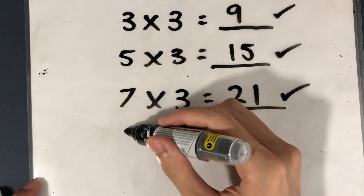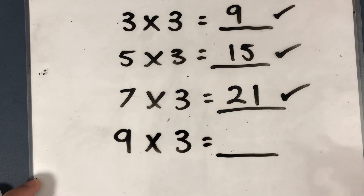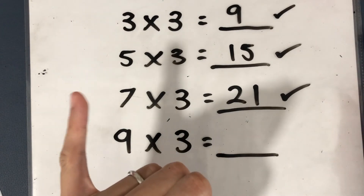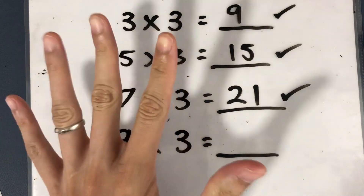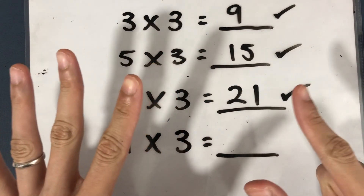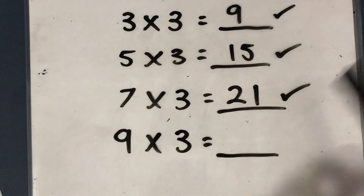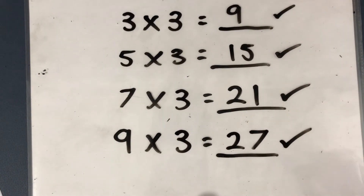Final question. What is 9 times 3? This will be difficult — try it on your own. 9 times 3: 3, 6, 9, 12, 15, 18, 21, 24, 27. The answer is 27.